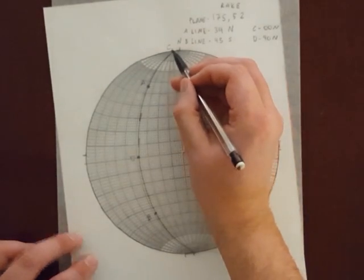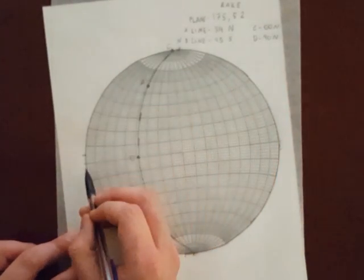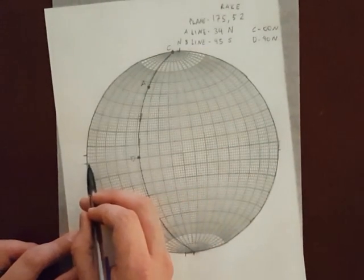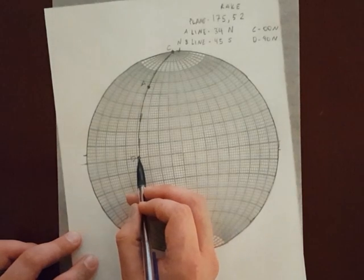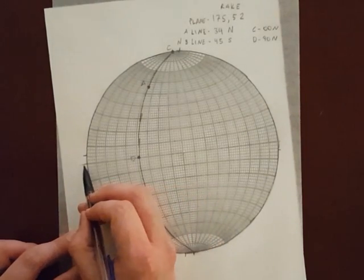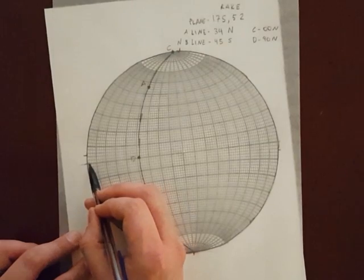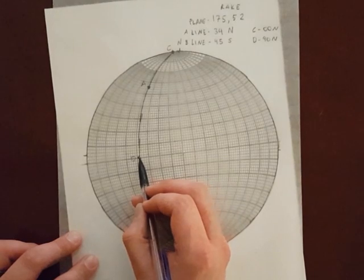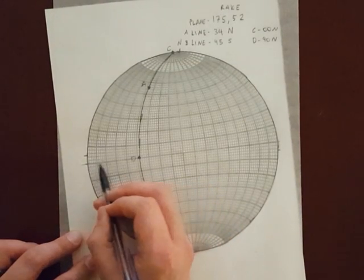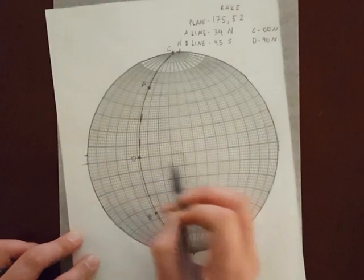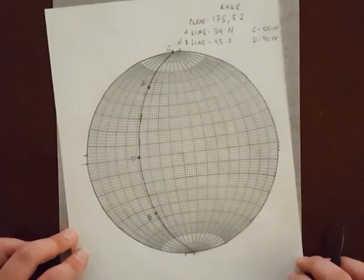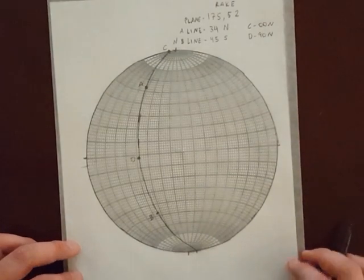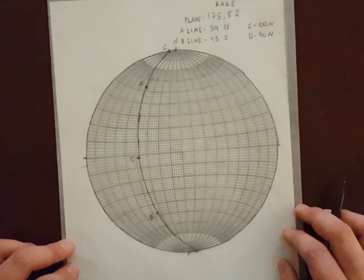Well, check this out. So if here's strike, this is your dip direction. So your line with a rake of 90 is parallel to your dip direction, and its plunge is the same angle as the dip of your plane. The plane has a dip of 52, and line D has a plunge of 10, 20, 30, 40, 52. So that's a fairly useful relationship to keep in mind, and you have two endmembers to work with: rake of 0 is parallel to strike, rake of 90 is parallel to dip.